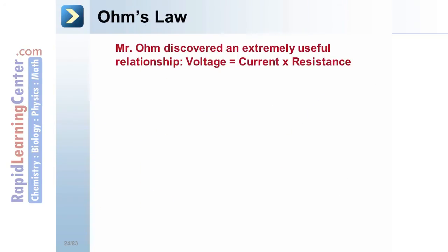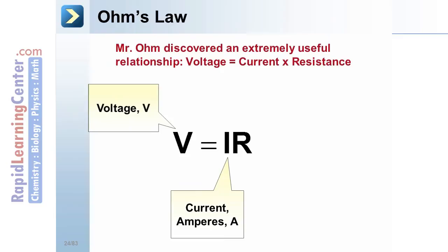Ohm's law. Mr. Ohm, thus the name, discovered an extremely useful relationship. Voltage equals current times resistance. Our current, in amperes, our voltage, or electric potential, in volts, and our resistance, in ohms.